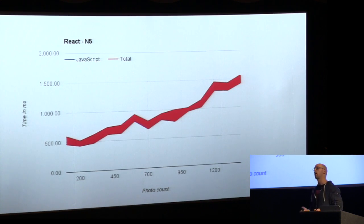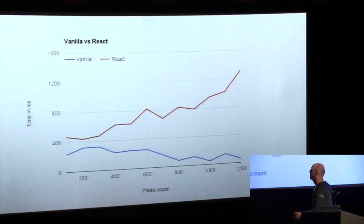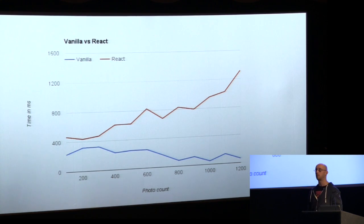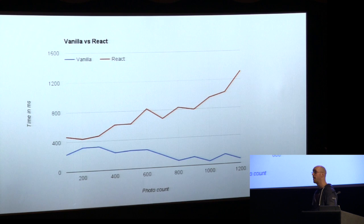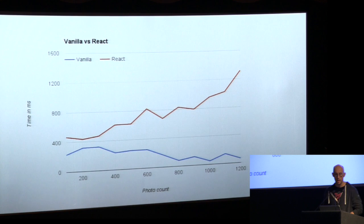Then you say: fast compared to what? Fast compared to vanilla. The time in JavaScript for vanilla at the bottom in blue is actually getting faster — because V8 is being a smarty-pants and optimizing your stuff. Whereas the time in JavaScript for React was going up.